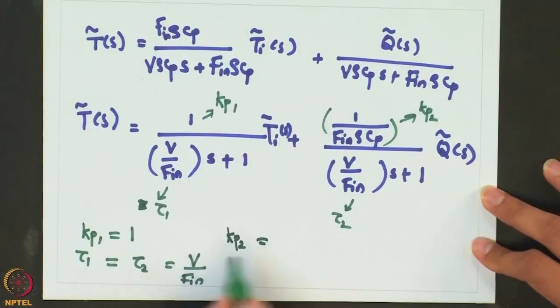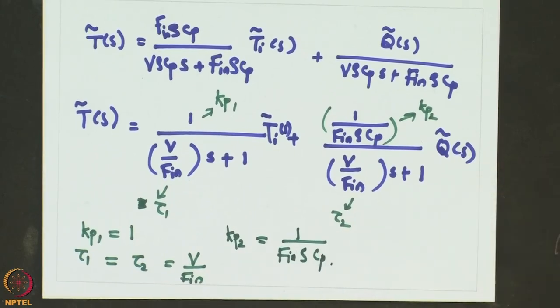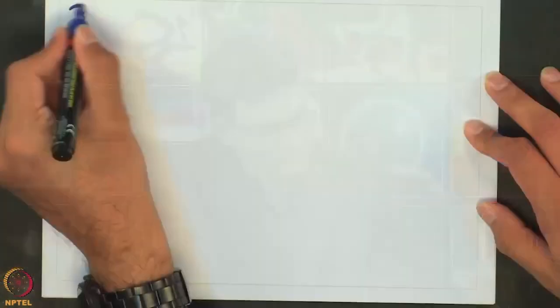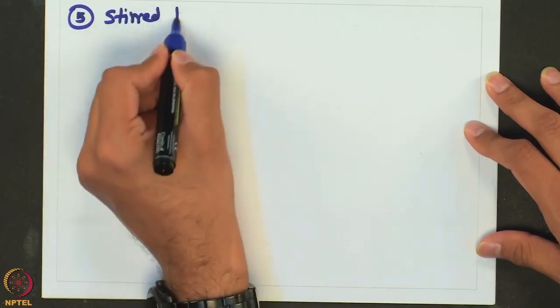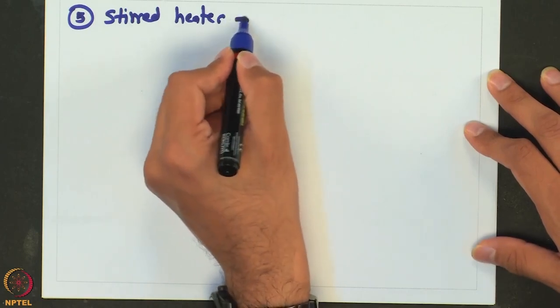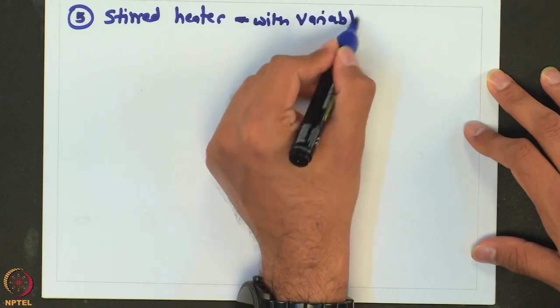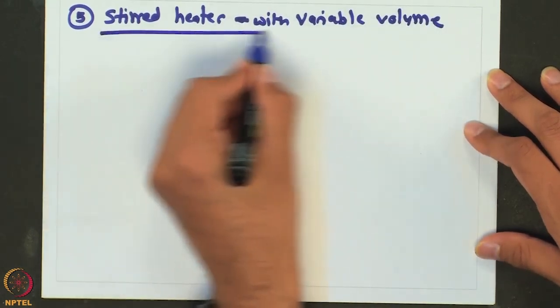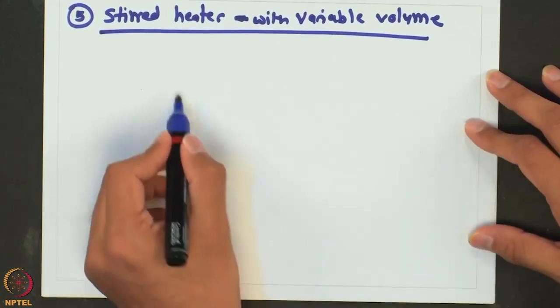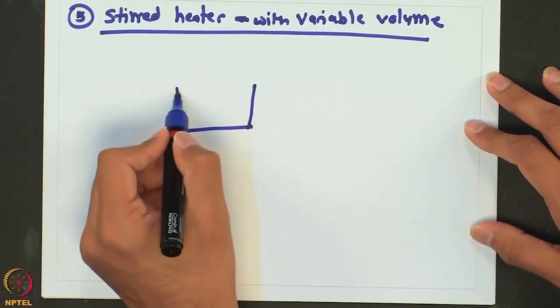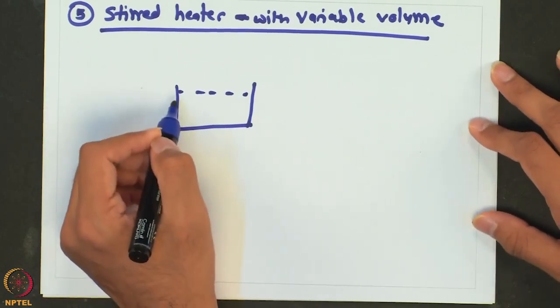This system has two capacities, both of first-order nature. Lastly, let me take an example which combines both thermal and material effects. The fifth example we are going to take is a stirred heater with variable volume. We will remove the assumption that the volume of the tank remains constant, because there is always a possibility that the inlet and outlet flow rates are not kept at the same value.